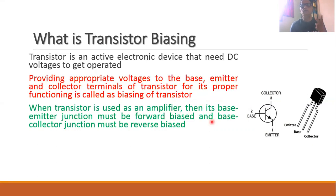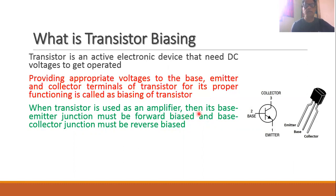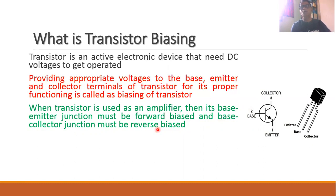The transistor can be used in two ways. The first is as an amplifier, and the other way is as a switch. When you want to use the transistor as an amplifier, its base-emitter junction must be forward biased and the base-collector junction must be reverse biased. If you want to use the transistor as a switch, then either both junctions are forward biased or both junctions are reverse biased.